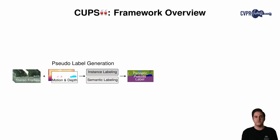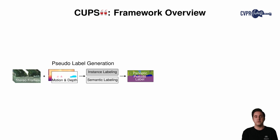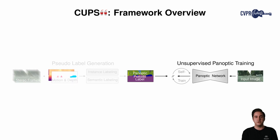We present CUPS for scene-centric unsupervised panoptic segmentation. CUPS is composed of two main components. First, we generate panoptic pseudolabels using stereo frames, as well as unsupervised motion and depth maps. Second, we train a monocular panoptic network using our unsupervised pseudolabels and perform self-training.